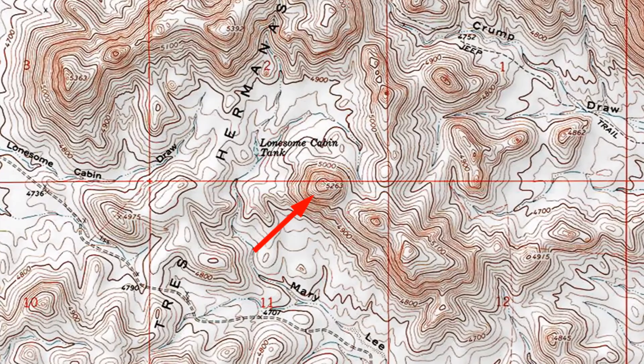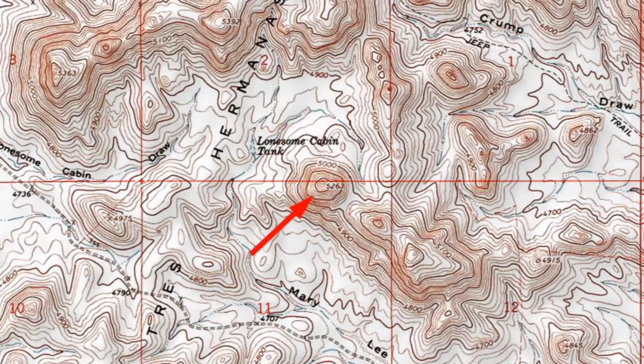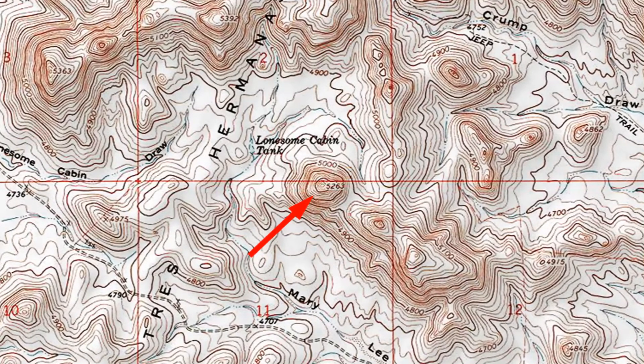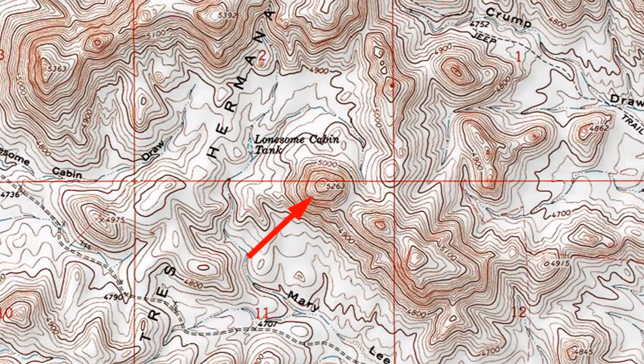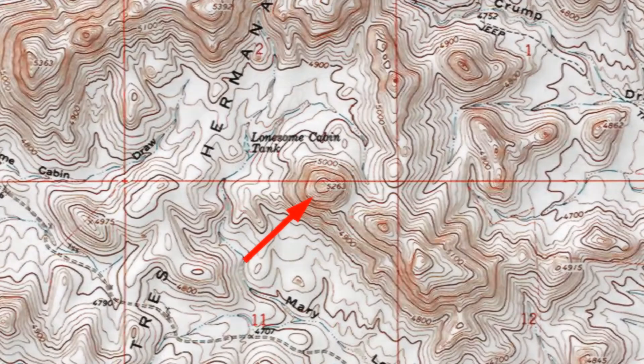There's just one more thing I want to say about elevations. At the center of this image is a hill that doesn't have a name, but the elevation, 5,263 feet, is indicated. You can refer to that hill military style as Hill 5,263.